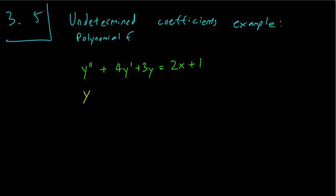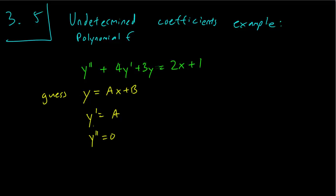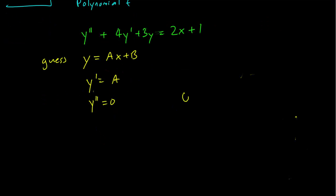So let's try guessing that y is going to be a linear polynomial too, with ax plus b. This means y prime is going to be a, and y double prime is going to be 0. Let's see what happens. Plugging that into the equation, we get that 0 plus 4a plus 3ax plus b equals 2x plus 1.